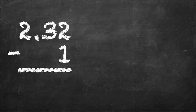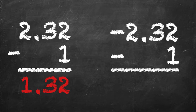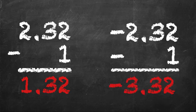So 2.32 minus 1 equals 1.32. Negative 2.32 minus 1 is equal to negative 3.32. And that's the second part.